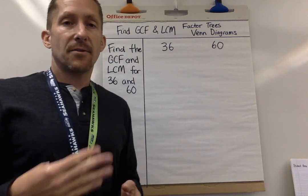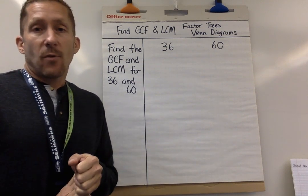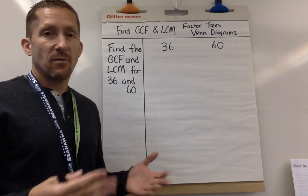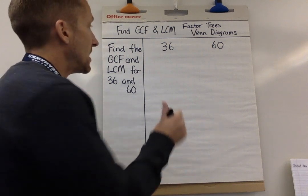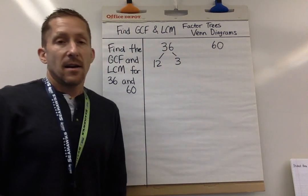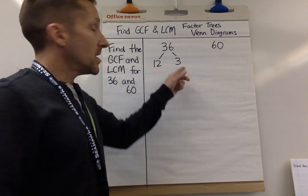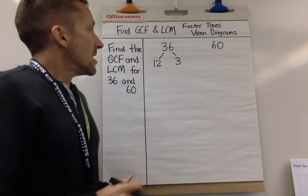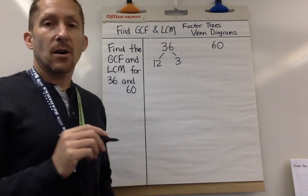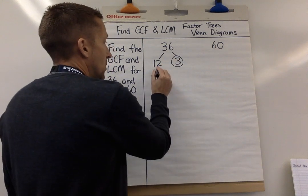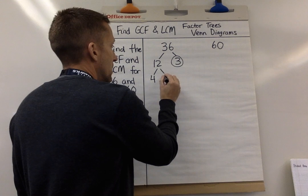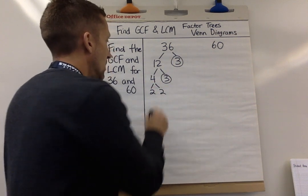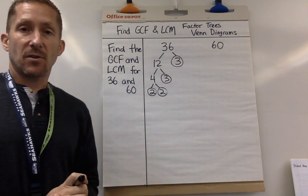I'm going to write 36 and 60. Think about what two numbers multiply together to make 36 — there are lots of combinations: four times nine, six times six. The only one you can't use is one times 36 because we've got to break it down. I'm going to break it down into 12 times 3. If a number can't break down anymore, you circle it — that's called prime. I can't break down 3 any farther, so I stop. 12 breaks down into 4 times 3 — circle that 3 — and 4 breaks down into 2 times 2.